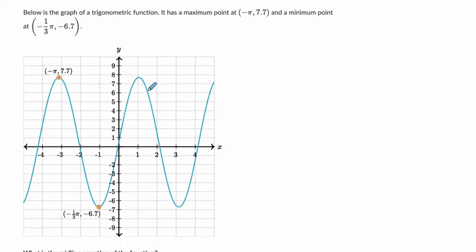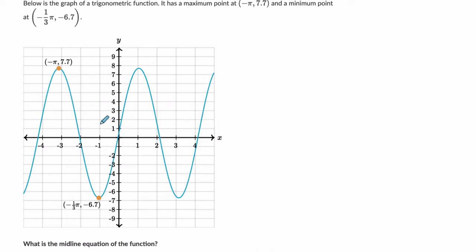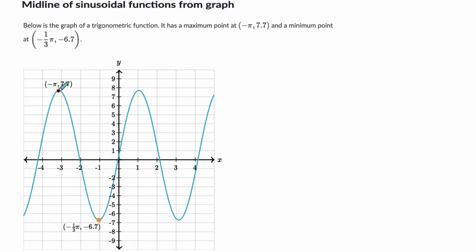Let's try another one. We have another graph. The idea is you can get any kind of graph. You're given some information about a peak, and I call them valleys, the max and min points. They're saying here that the max is at negative pi, 7.7, and the min is at negative pi over 3, negative 6.7. These are those two points, and they want to know what's the midline.